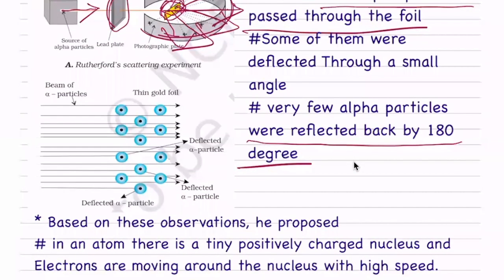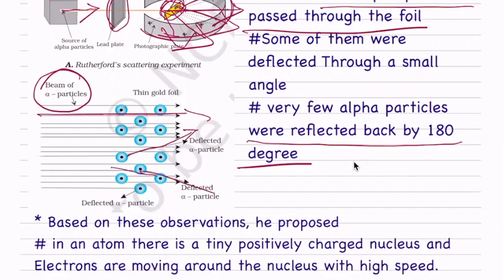We can see the beam of alpha particles hitting the thin gold foil. Most alpha particles pass through. Some are deflected at a small angle. The first result shows a small angle deflection.